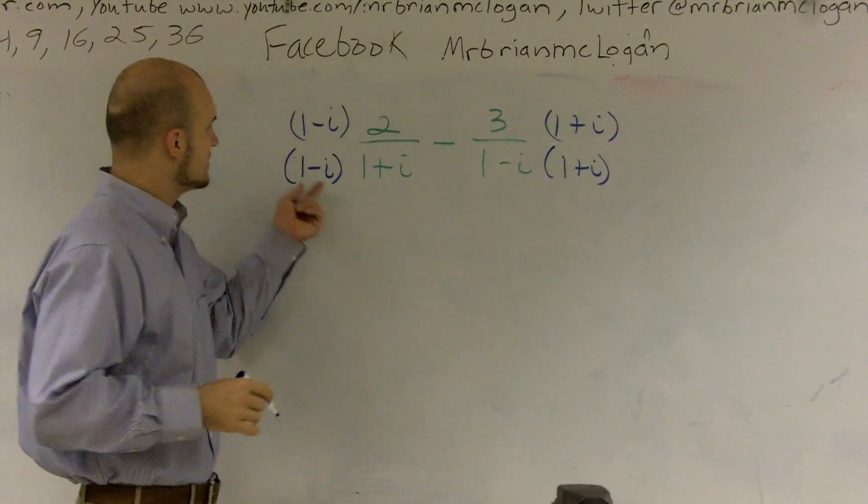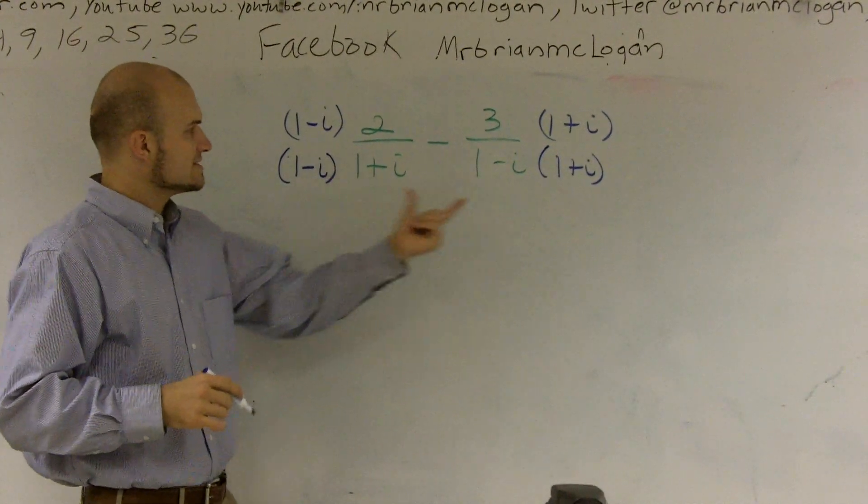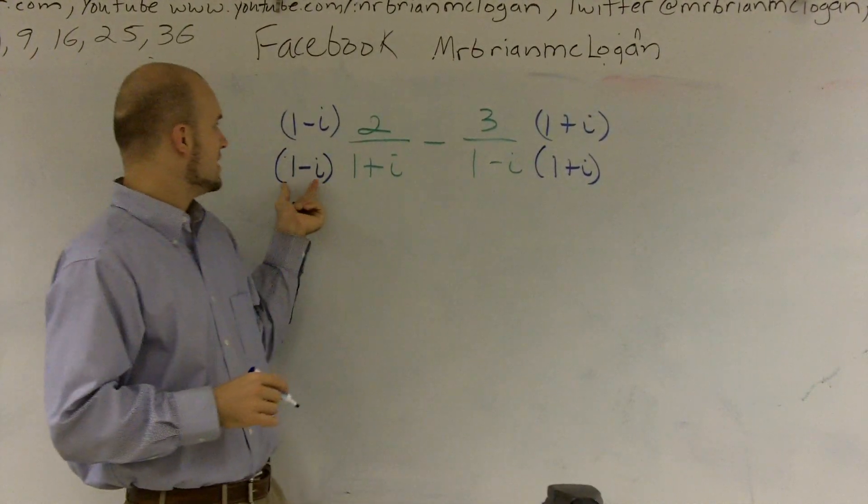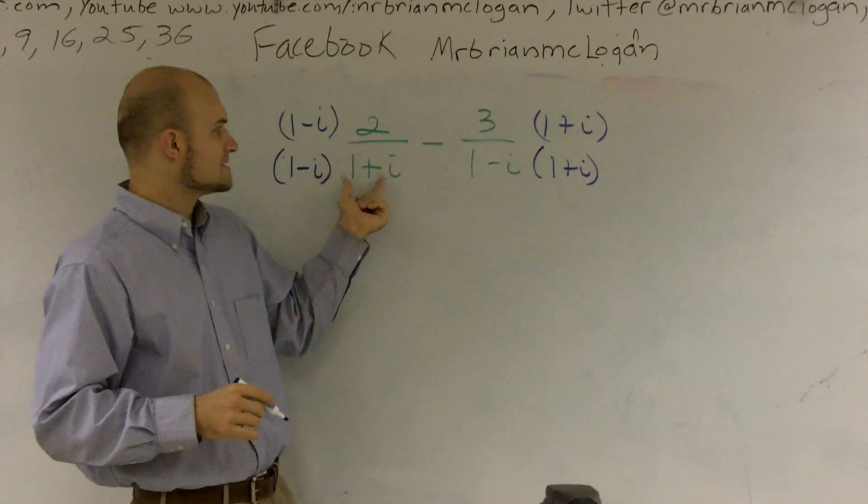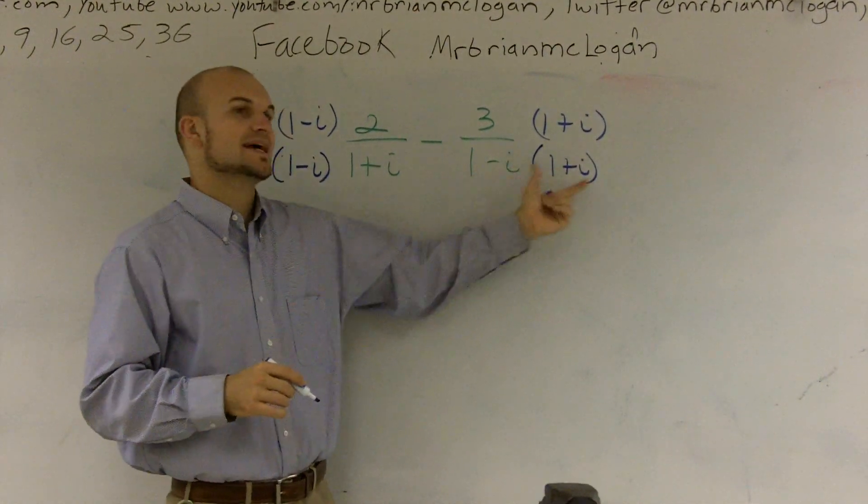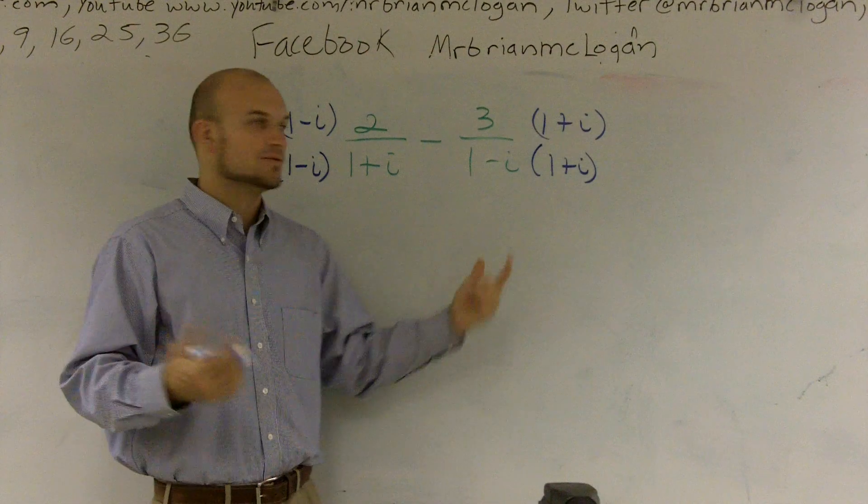Because the reason why is when I multiply these two, it's the same thing as I'm multiplying 1 minus i and 1 plus i. And again, over here, I'm doing the exact same thing. So therefore, both denominators will be equal.